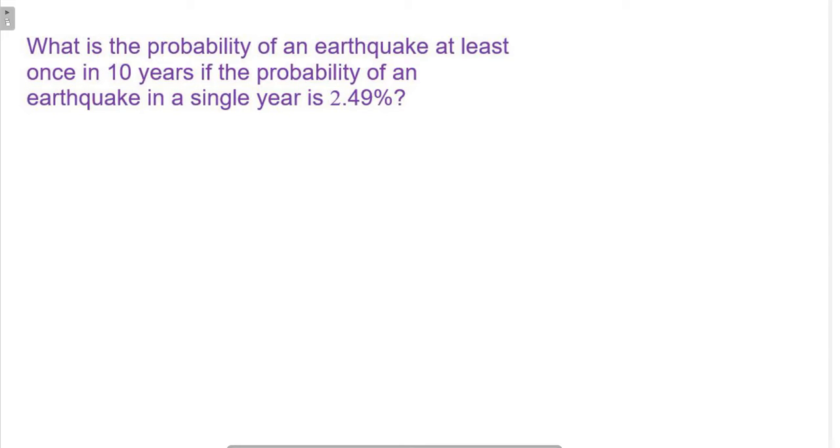So today we're looking at a probability problem, and I don't love how it's worded, but I'm going to read it exactly how it came in, and then we'll talk about what it really means. It says, what is the probability of an earthquake at least once in 10 years if the probability of an earthquake in a single year is 2.49 percent?